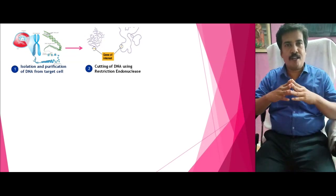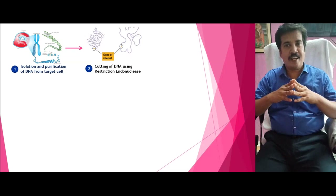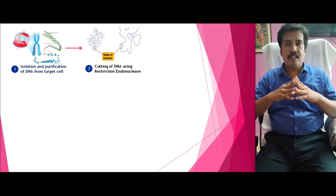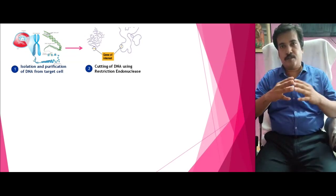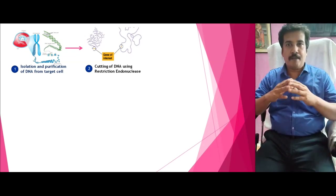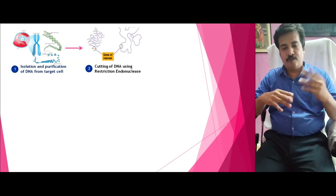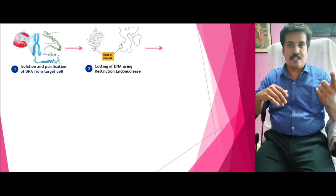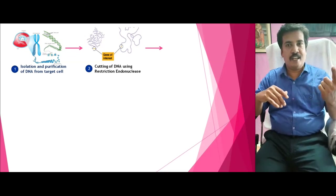Restriction endonucleases generally produce two types of ends: one is the sticky end and the second is the blunt end. For research purposes, people prefer sticky ends because sticky ends can be annealed later on very easily.